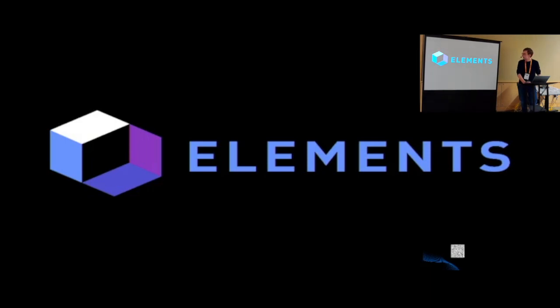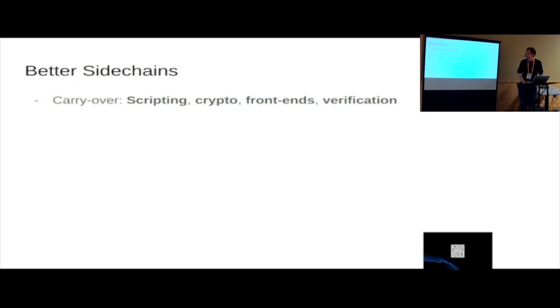Right, I want to talk about elements a little bit. So, it's a federated sidechain. It's the basis of liquid. So, you can do better sidechains. Sidechains are very similar to Rollups. I guess Rollups minus ZKP plus the federation. So, they carry over a lot of these, almost all of the benefits of simplicity. So, you can do better scripting. You can do new cryptography. You can do frontends. You can have verification of the scripts that you use, of the programs you use.